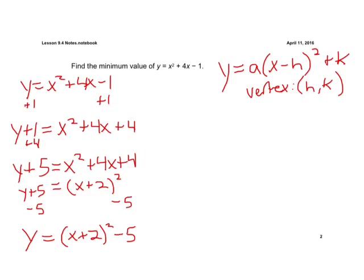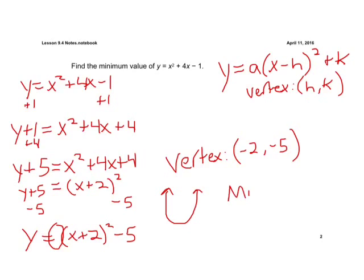To find our vertex we said it was h k and we kind of thought opposite. So our vertex is going to be negative 2, negative 5. We see that a is positive in this case because this number is a 1 here which is a positive 1. So we know it's going to open up, so it's going to have a minimum. And if we remember our minimum, if we have a parabola that opens up our minimum is our y value. So our y value is negative 5, so we have a minimum of negative 5.